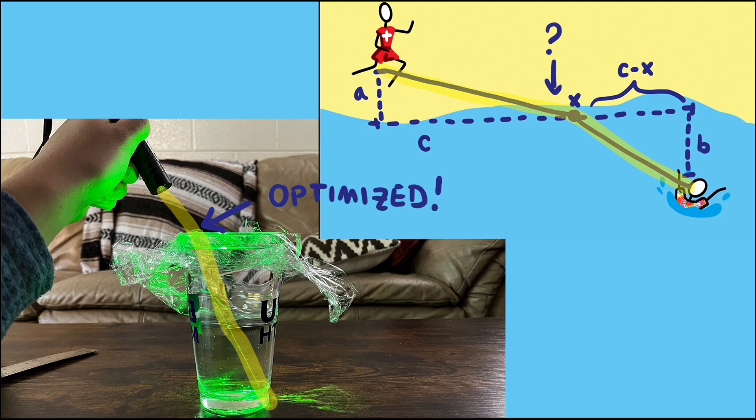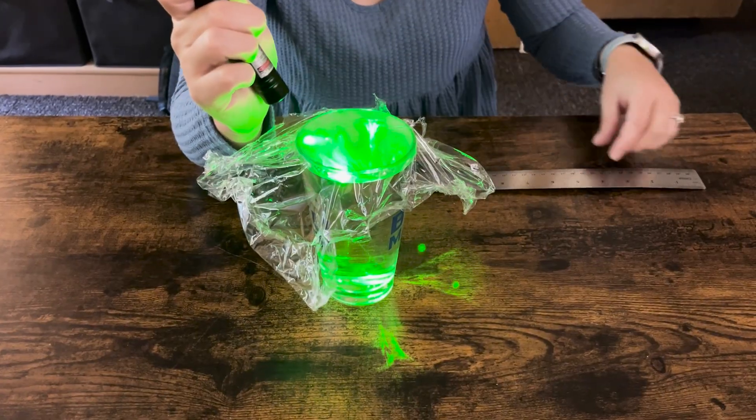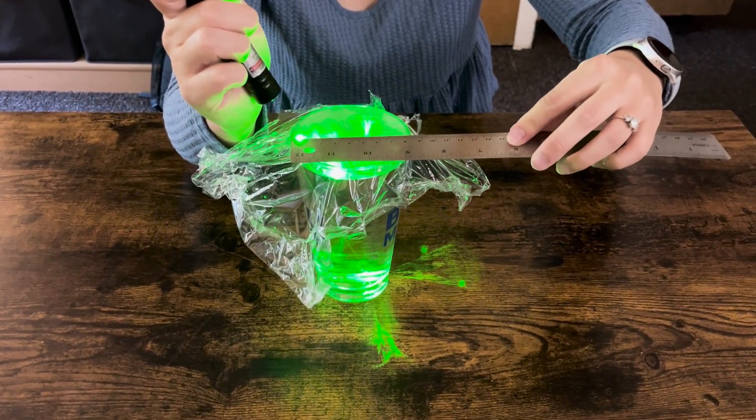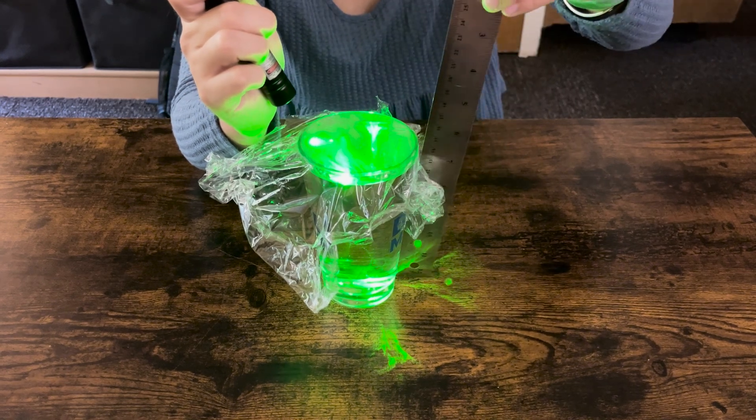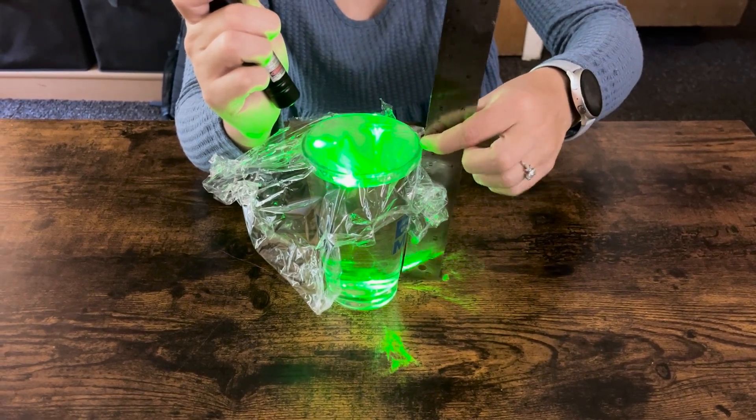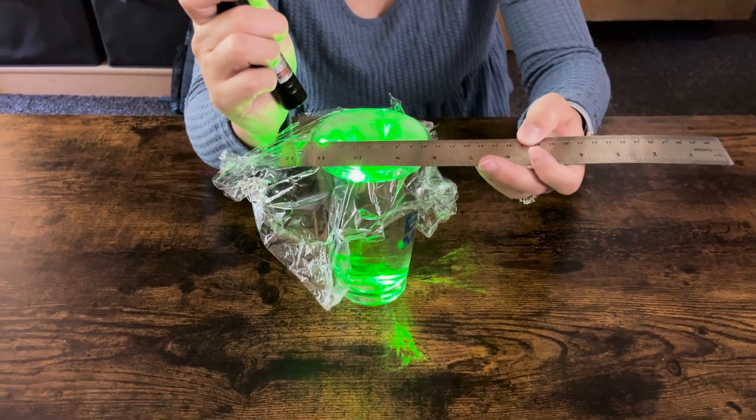It is as if the light rays already did the calculus to know where to go to get to specific points in the smallest amount of time. In our handy at-home experiment, you can carefully measure the distances A, B, C, and even X, since you know that the system set up in front of you is already optimized for time, since light always takes the fastest path.